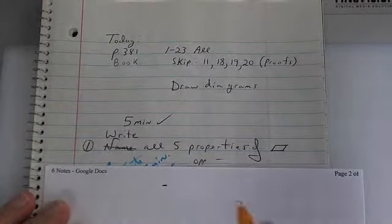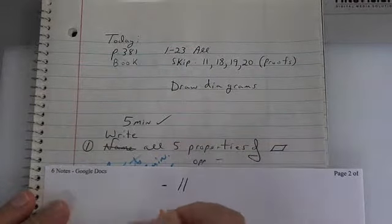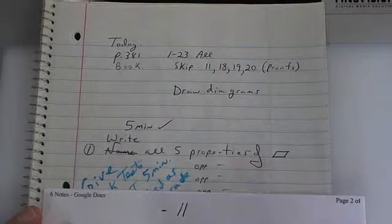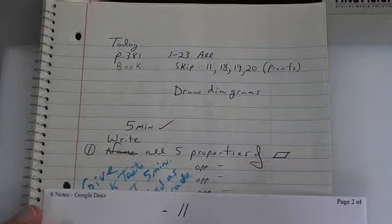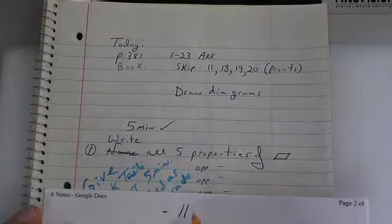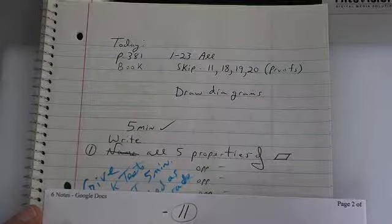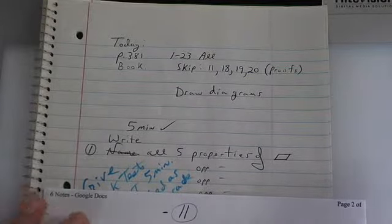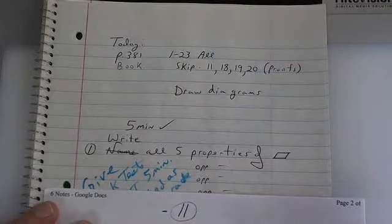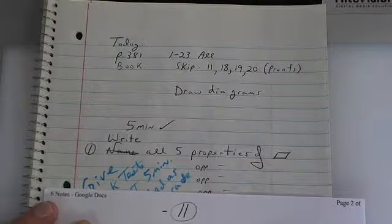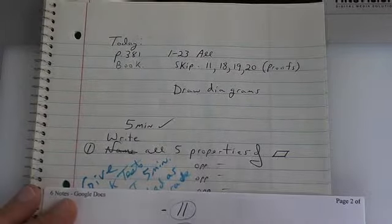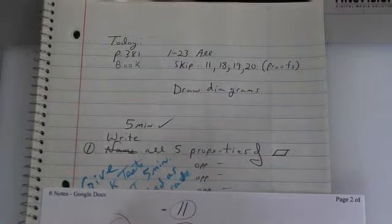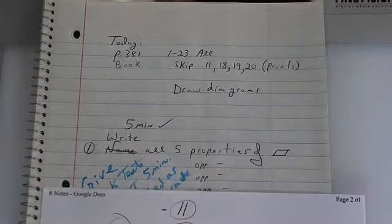All right. Opposite sides are parallel. Opposite sides are congruent. And opposite angles are congruent. Sides are parallel, sides are congruent, and opposite angles are congruent. Then you have diagonals bisect each other. And then you have consecutive angles add up to 180. So those two are consecutive, they add up to 180. These two are consecutive, they add up to 180. That's all it is.